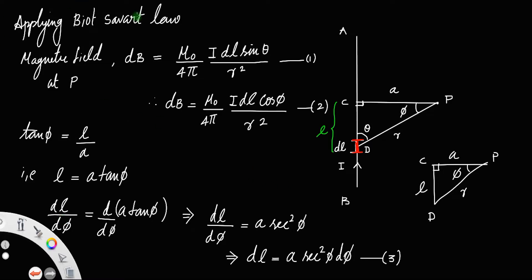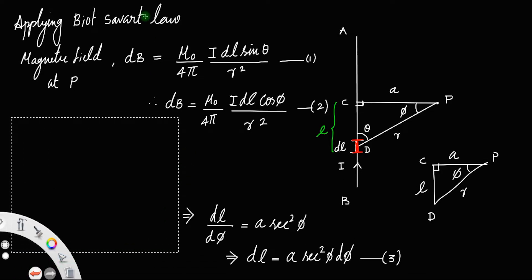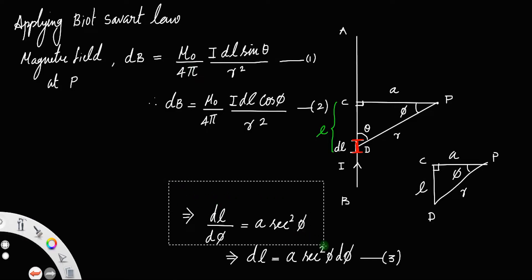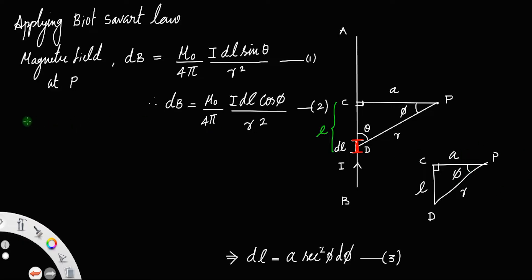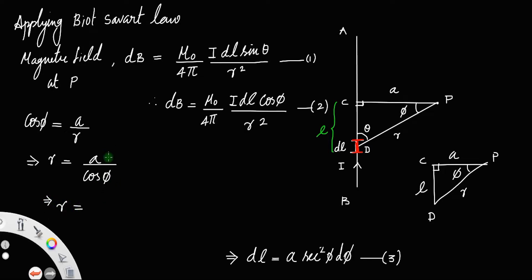Also, when you take the value of cos phi, cos phi equals adjacent divided by hypotenuse, that is a by r. This implies r equals a by cos phi, which means 1 by cos phi equals sec phi, so r equals a sec phi. Let us call this as equation number 4.